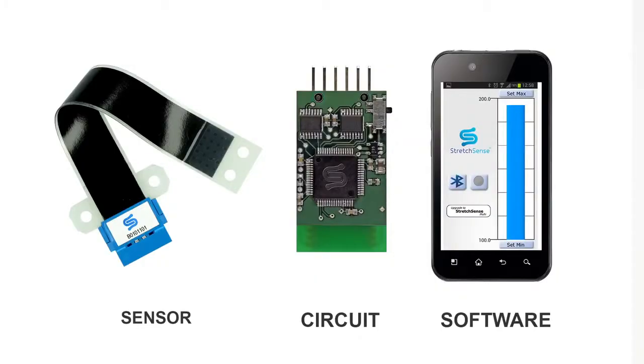The kits consist of two stretch sensors and one Bluetooth sensing circuit. The circuit interrogates the sensors, captures the data, and transmits it to your smartphone, tablet, PC, or what have you.